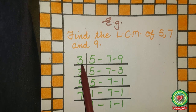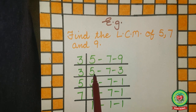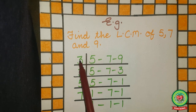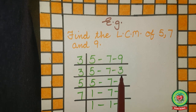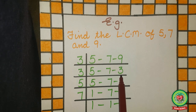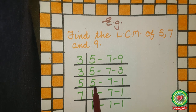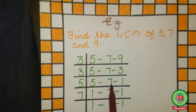With 3 as divisor: on the 3 times table, 5 doesn't come, so bring it down. On the 3 times table, 7 doesn't come, so bring 7 down. On the 3 times table, 9 comes at 3 threes, so below 9 write 3. Now divide again by 3: 5 is not divisible, bring it down; 7 is not divisible, bring it down. 3 divided by 3 gives 1, so below 3 write 1.